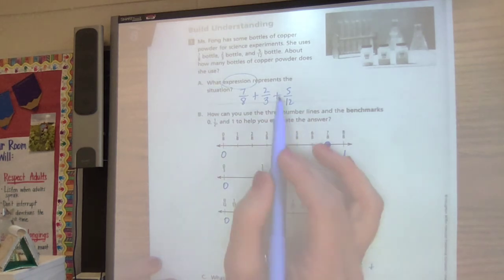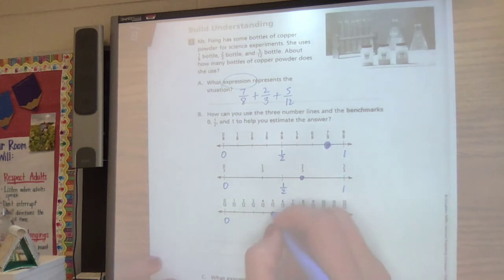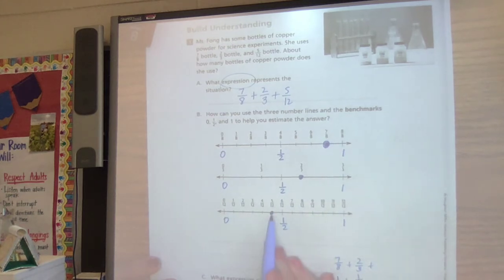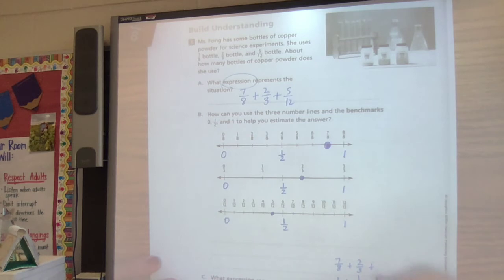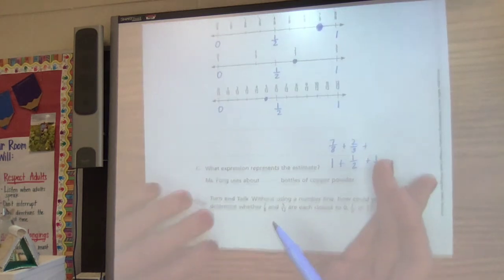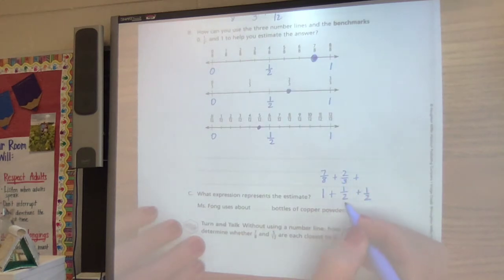And then we have five twelfths right here. Again, closer to a half than zero. And in my mind, I can easily add these up. A half plus a half I know is one. And one plus one is two. So she uses about two liters of the copper powder.